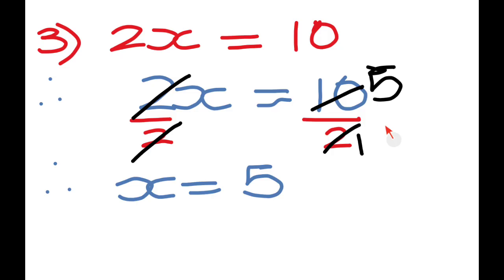To check: what is the number that when multiplied by 2 gives you 10? That number is 5, so it checks out.